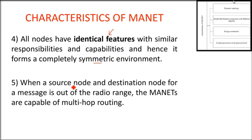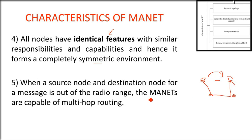In this symmetric environment, a source node and a destination node — which is sending and which is receiving — if they are out of radio range, MANETs are capable of multi-hop routing. There can be multiple intermediate nodes through which a message or communication can pass. This is called multi-hop routing; it can take any available path.